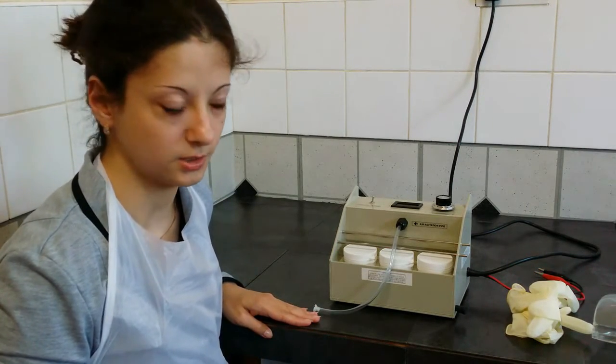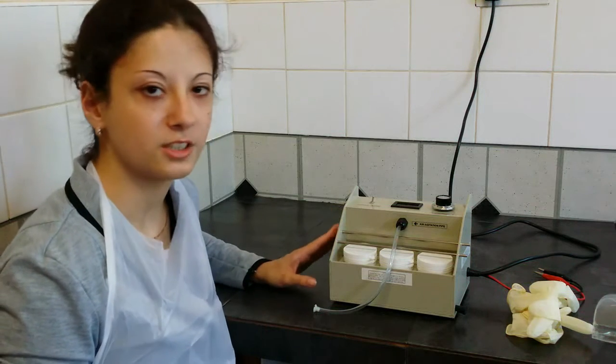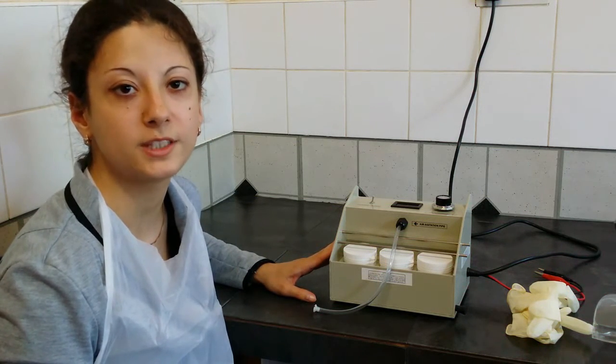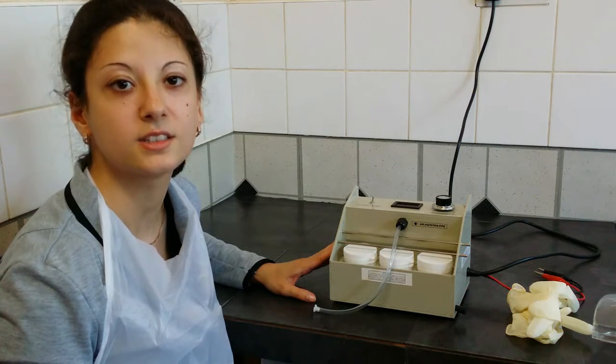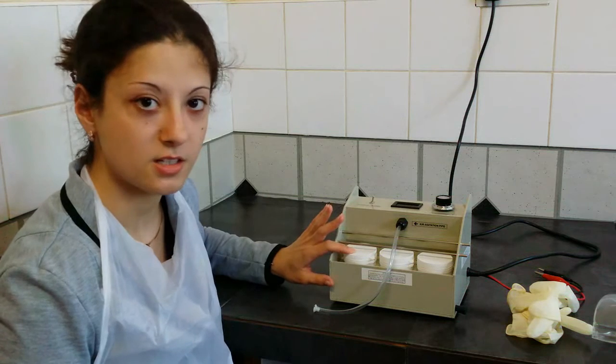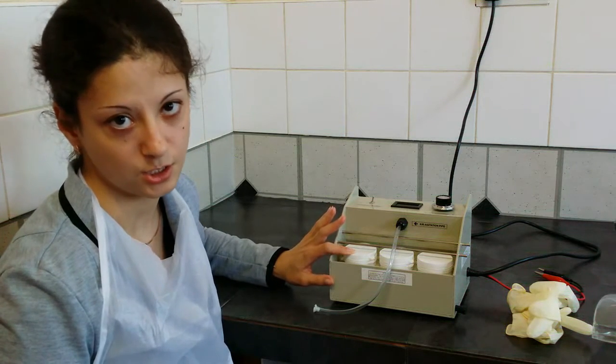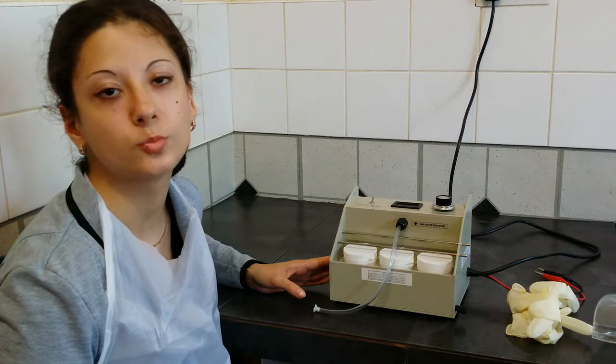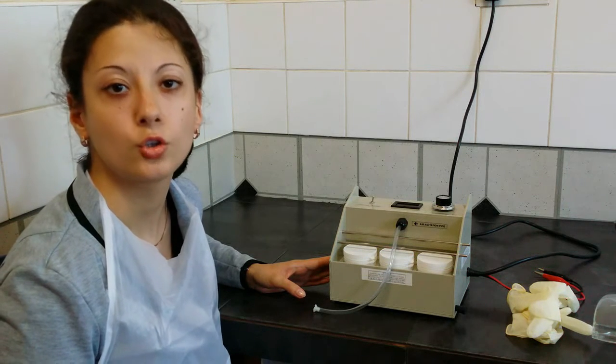So let's get started. Our compact electroplating machine is ideal for those who want to electroplate such objects as rings, earrings, and pendants due to the size of the tanks, which is 50 ml each. Also, this machine is very good for those who want to plate with such chemicals as gold,